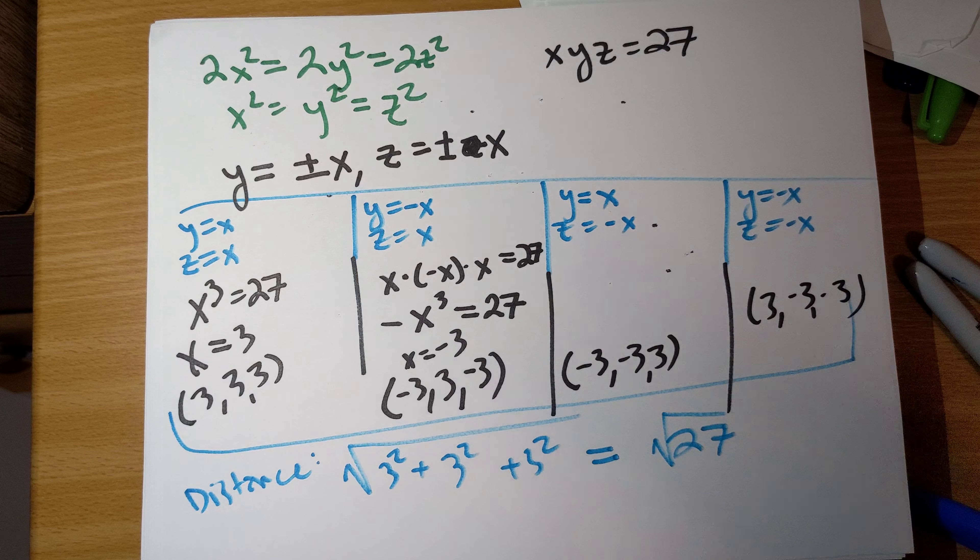If y = −x and z = x, then x·(−x)·x = −x³ = 27, which gives x = −3. So the point is (−3, 3, −3). Working through the remaining cases similarly gives (−3, −3, 3) and (3, −3, −3).